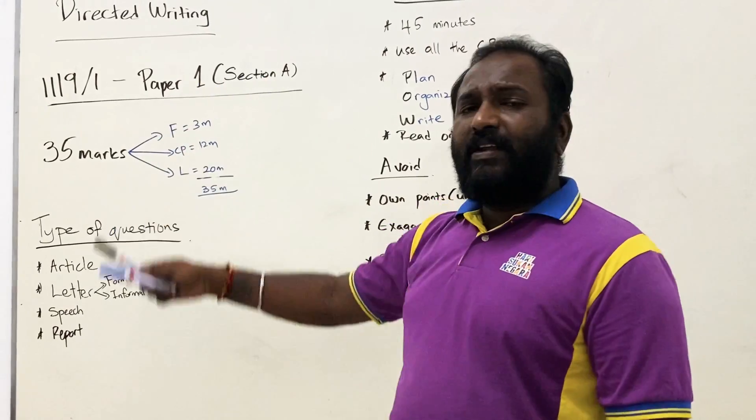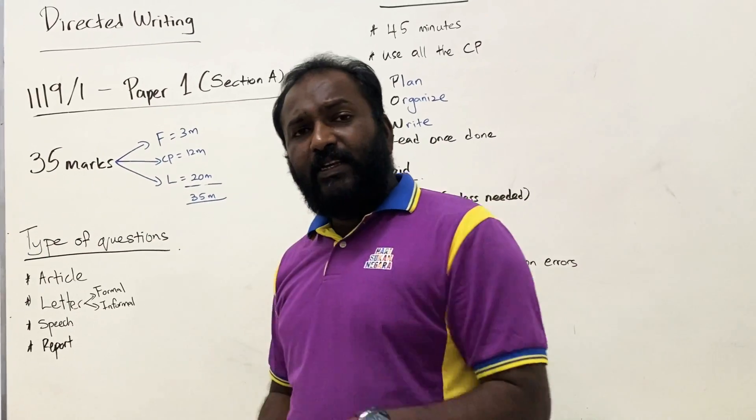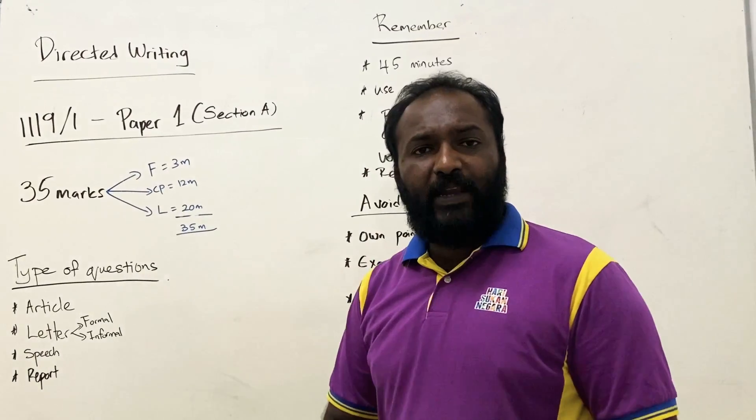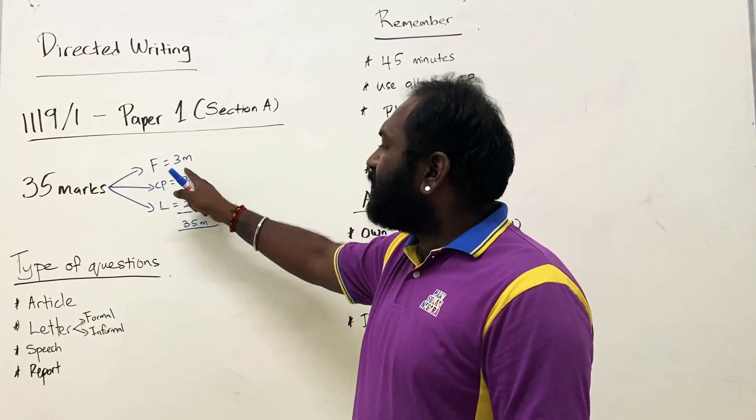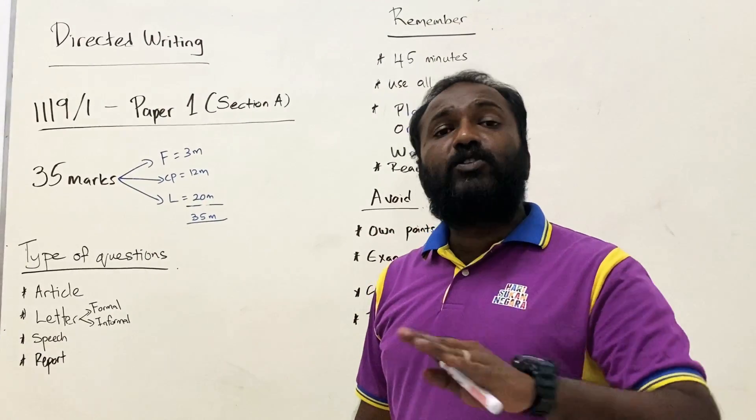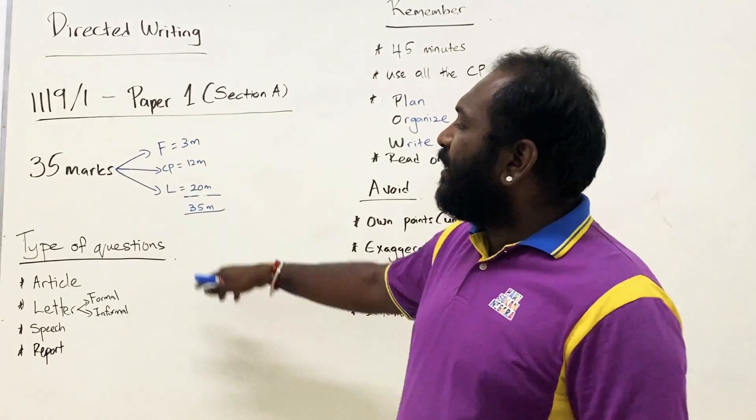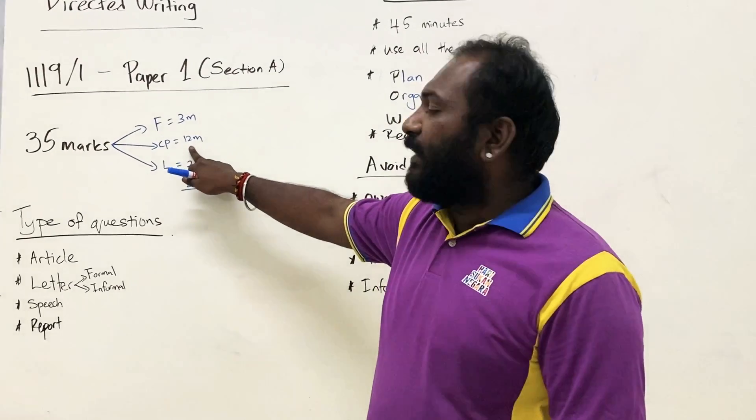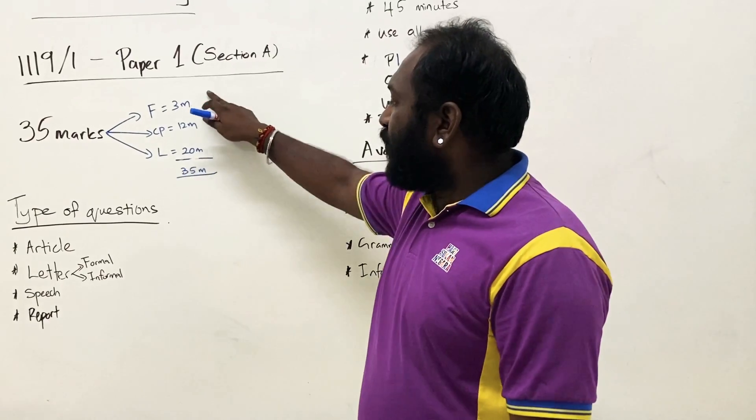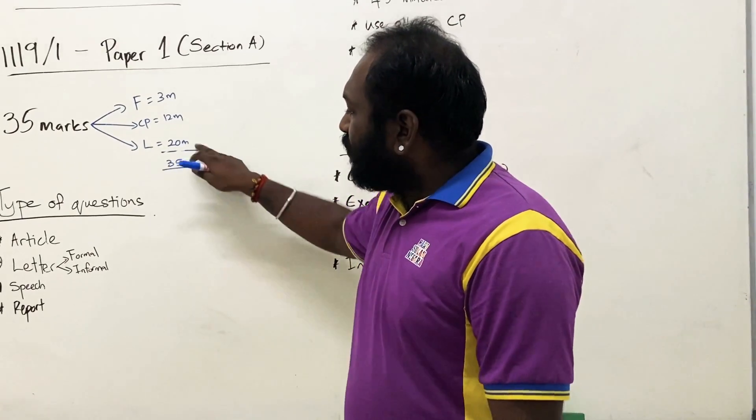For directed writing, you are given 35 marks. These 35 marks are based on three different categories. The first one is F, format, for which you can get three marks. CP stands for content points, which you don't have to worry about because you will be provided all the points. You can score up to 12 marks for your content points. And finally, language, you can score up to 20 marks.